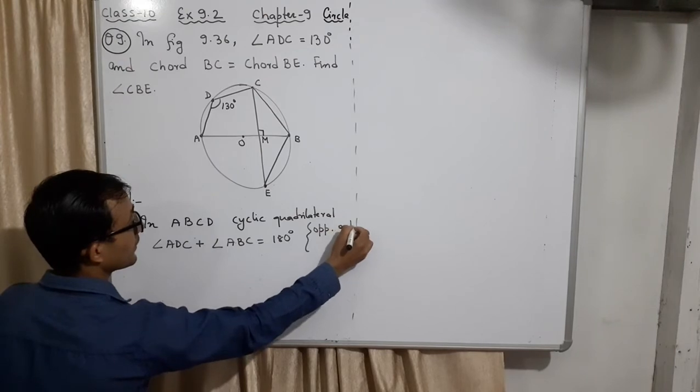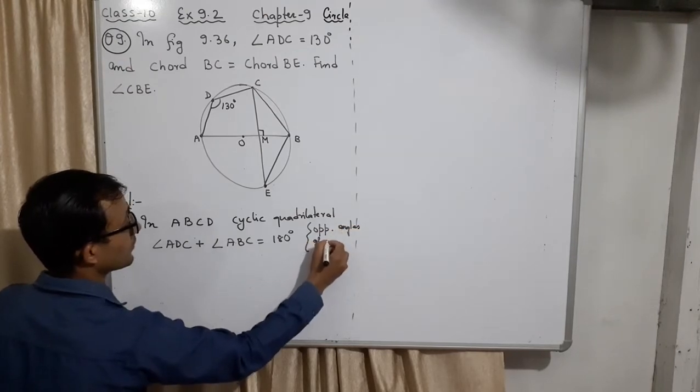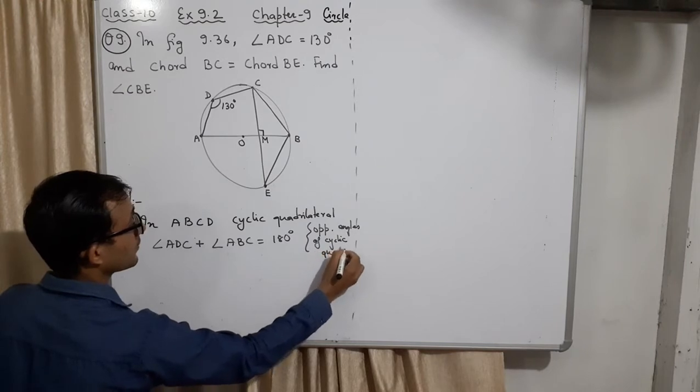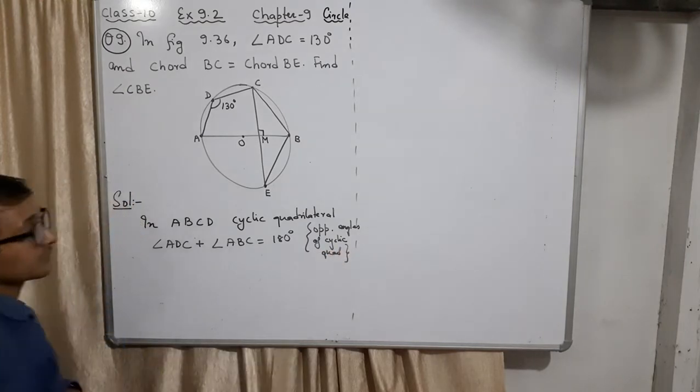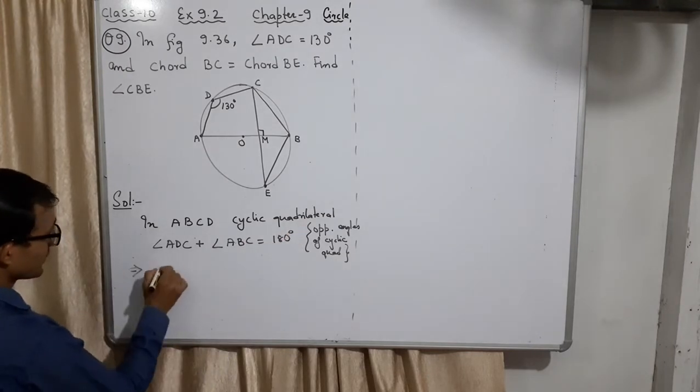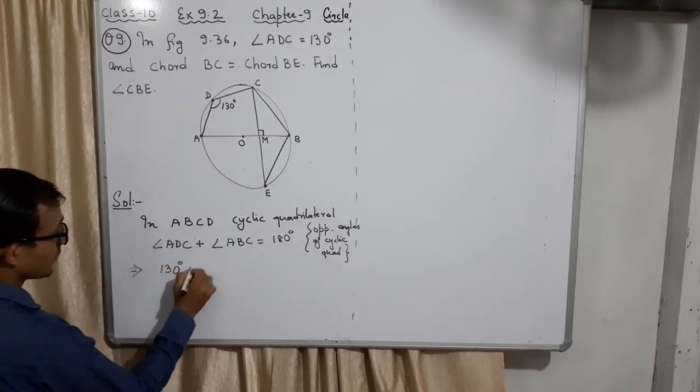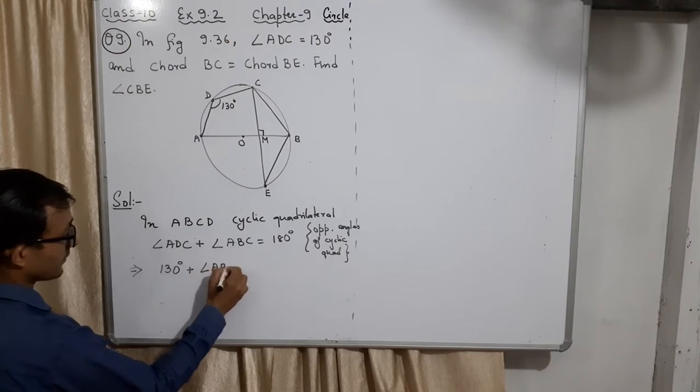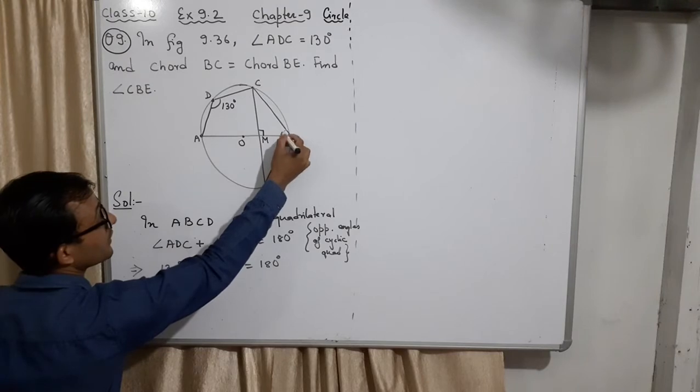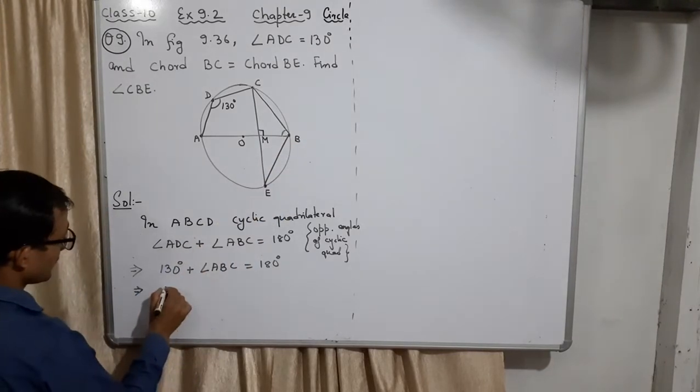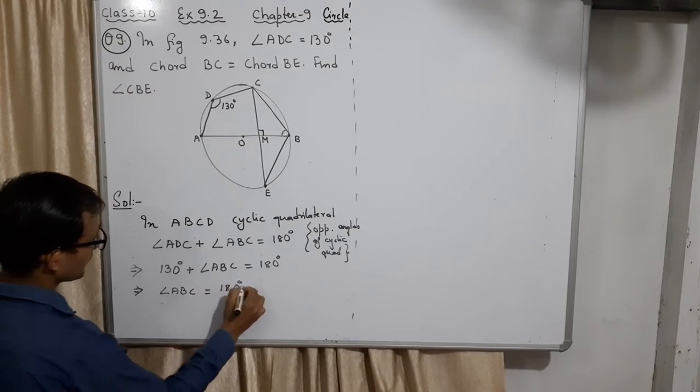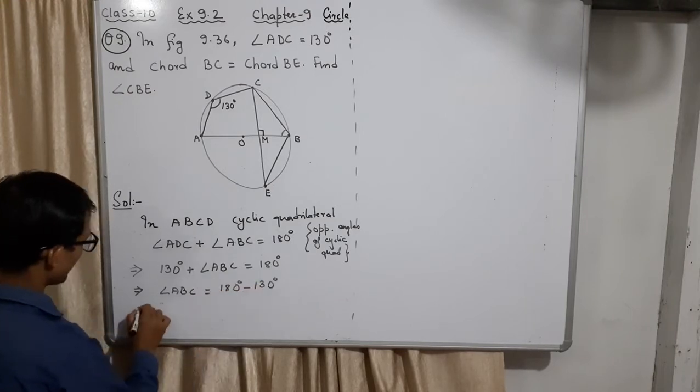Opposite angles of cyclic quadrilateral. In short, I'm writing, already it is known this is a cyclic quadrilateral. So what is this? This is 130 degrees. What is this? We do not know ABC. From here we will know what is ABC. Remember, ABC is only this much. I need this whole angle. ABC equal to what is this? 50 degrees.